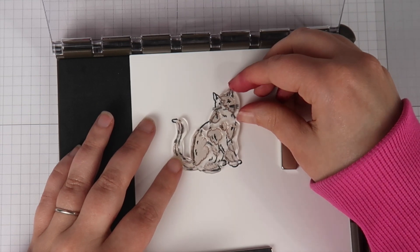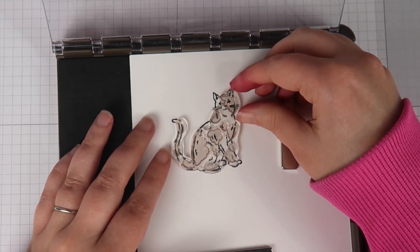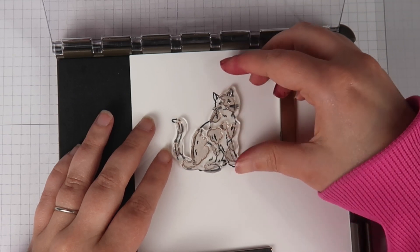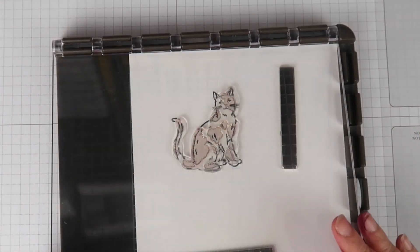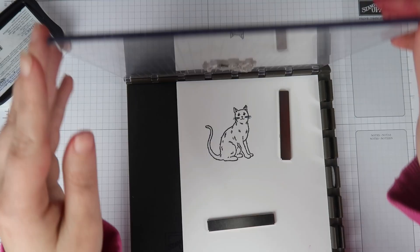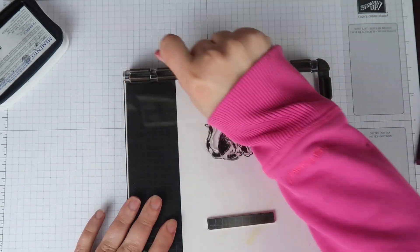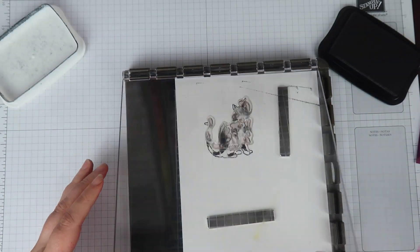Once I feel like they're lined up really well and everything is where it's supposed to be, I'm going to go ahead and close the lid to my Stamparatus. You can use any stamping platform for this. And I'm going to pick that up and then stamp it with my Memento Tuxedo Black ink.